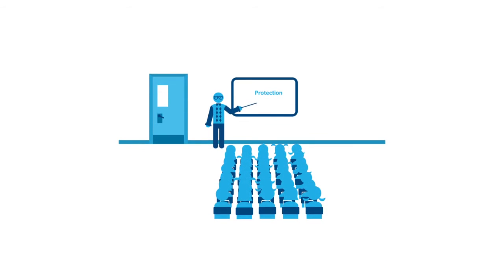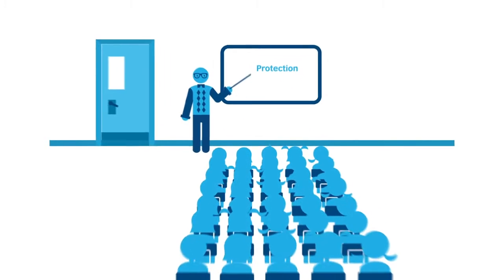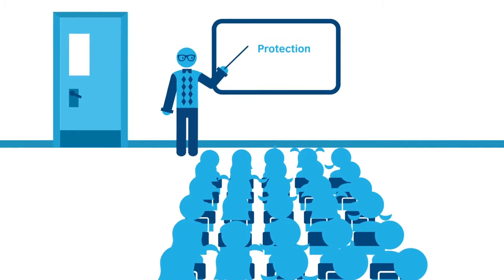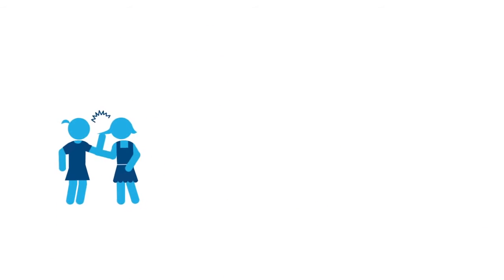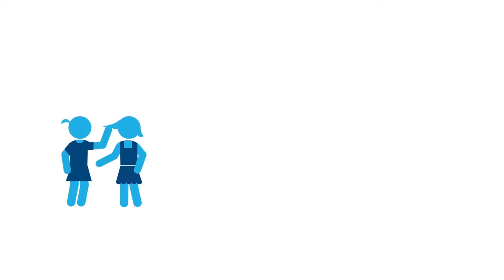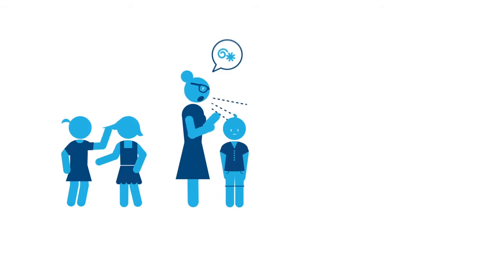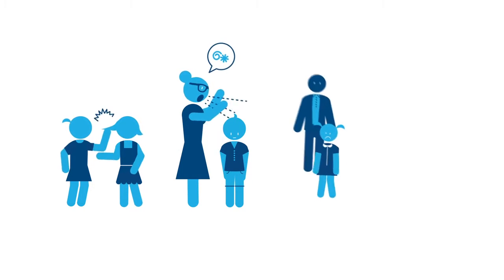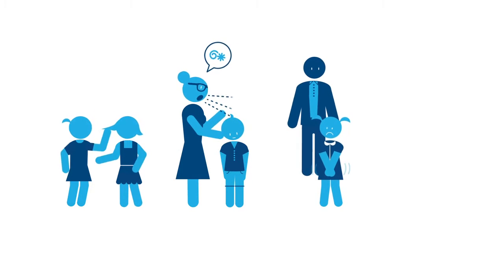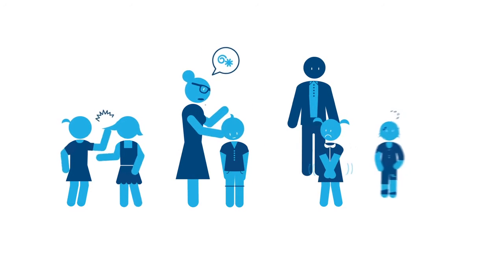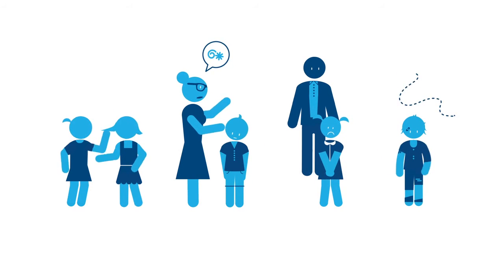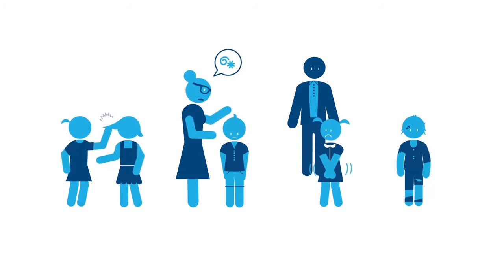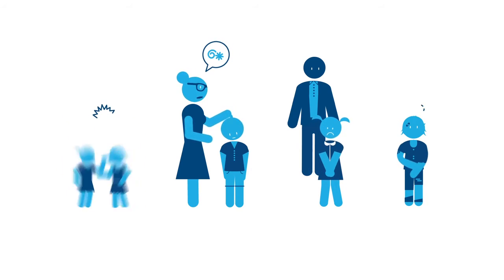The British Council works directly and indirectly with more than 9 million children and teenagers every year. When we talk about child abuse we refer to physical, psychological, emotional or sexual abuse. It also occurs when there is a lack of care from the parents or legal tutors.